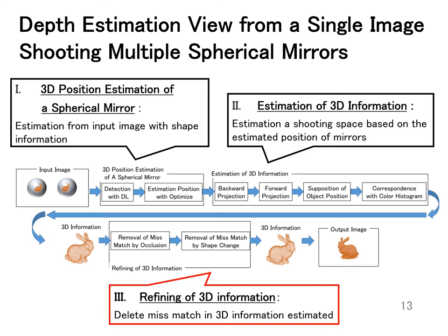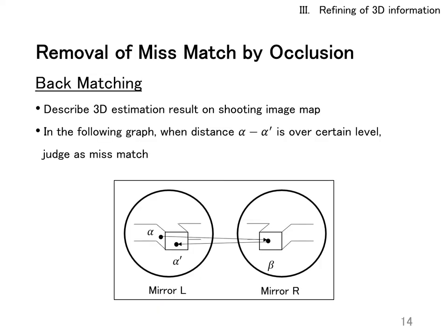Third, refining of the accurate 3D information. Here we remove mismatched points due to occlusion. In the case where there is a protrusion in space, the image changes between the two mirror images. For this, backmatching is applied to determine mismatched points.